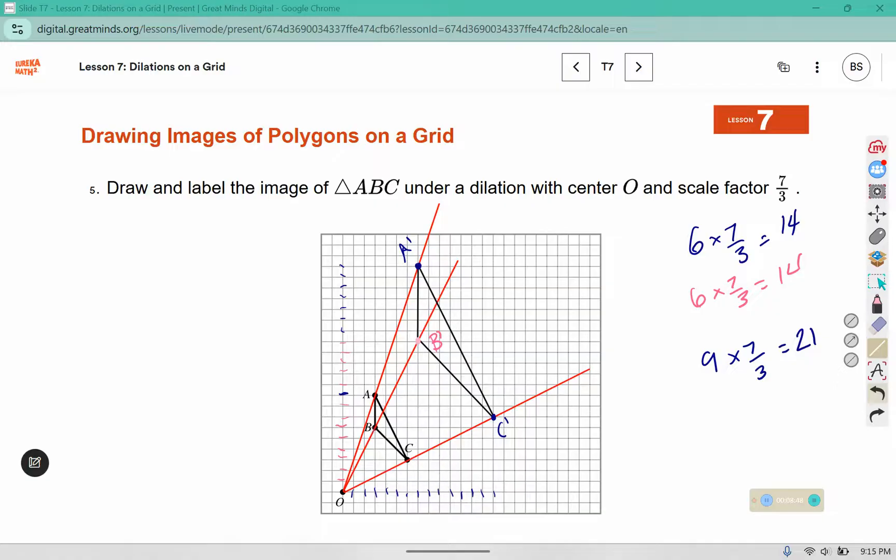And then we can see that these lines here are parallel. B, C, and B, C prime. A, B, and A, B prime. A, C, and A, C prime.